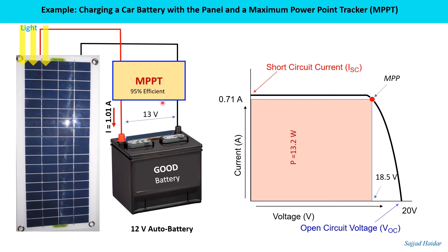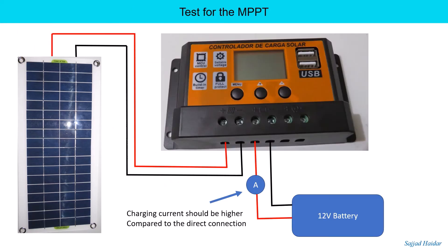So now if a maximum power point tracker is used in between the panel and the battery, what happens? The maximum deliverable power now is going to the battery. The voltage across the battery remains the same as 13 volt, only the current - that is the charging current - is higher now.